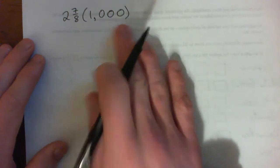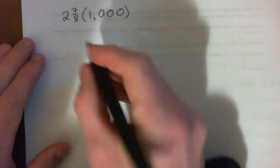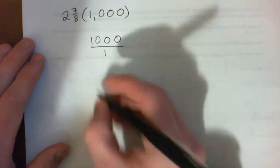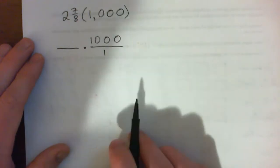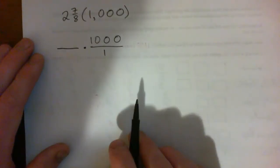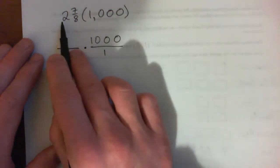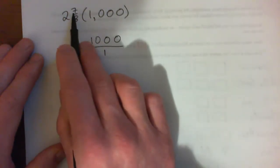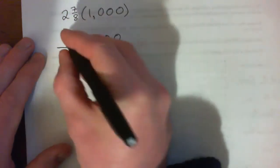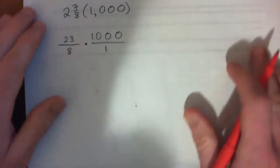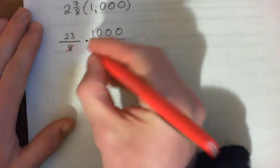We're essentially multiplying two fractions: one thousand is a thousand over one, and two and seven-eighths can be turned into an improper fraction. Eight times two is 16, plus seven is 23, so we get 23 over eight. And we're multiplying fractions — before we multiply we can cross cancel: eight into eight, or four and eight goes twice.